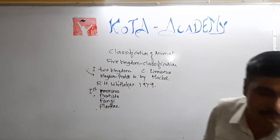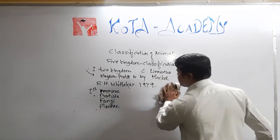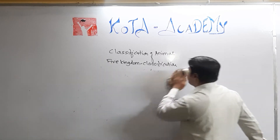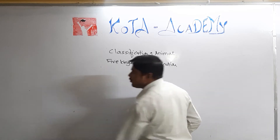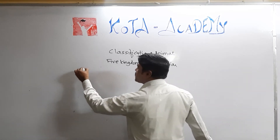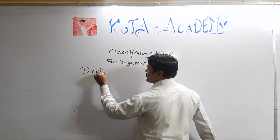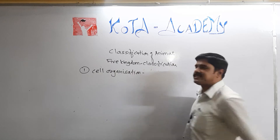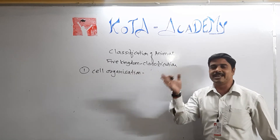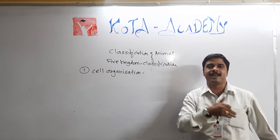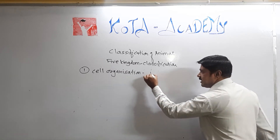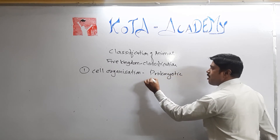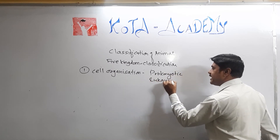Now, which criteria were used for the Five Kingdom Classification? The first criteria is Cell Organization — whether the organisms have prokaryotic cells or eukaryotic cells.